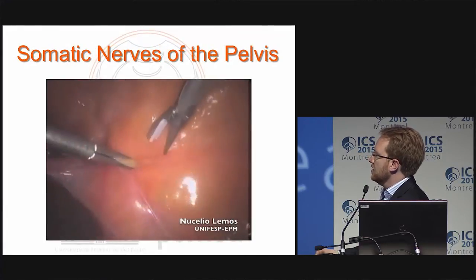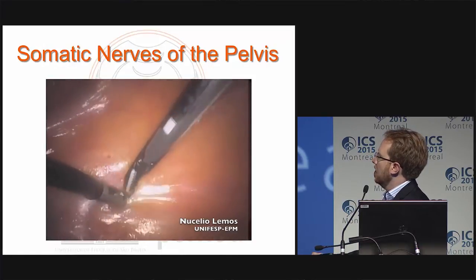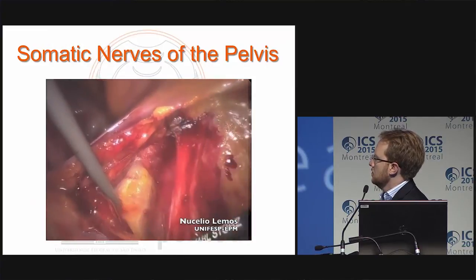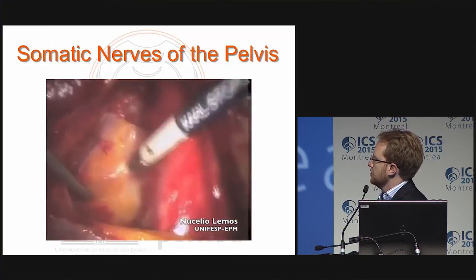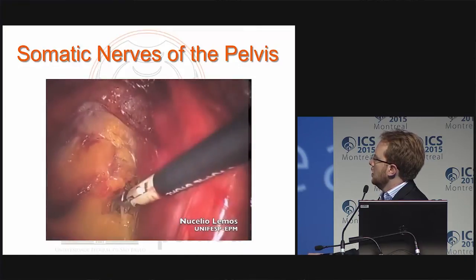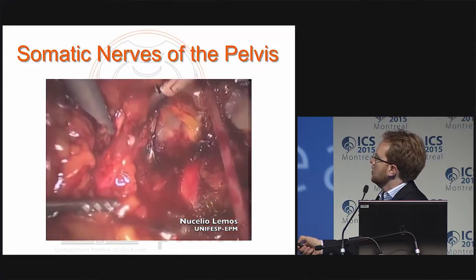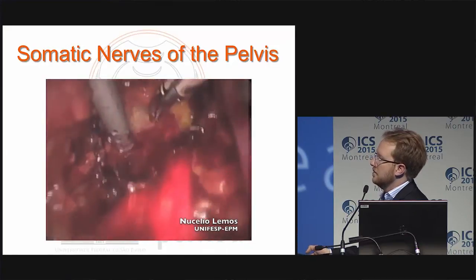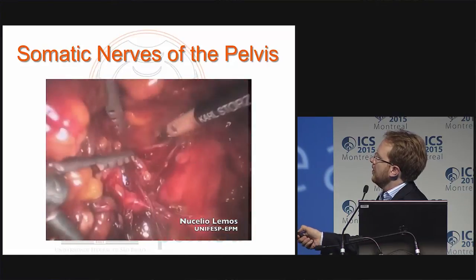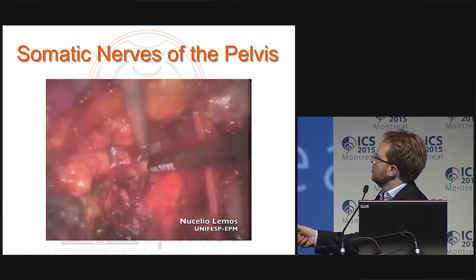These are the external iliac vessels. I'm opening the obturator space as if I was going to do a lymphadenectomy. This is the genitofemoralis nerve, the obturator nerve, the lumbosacral trunk, and the sciatic nerve. This is the endopelvic fascia, the pubocervical fascia, the white line here, and the ischial spine.